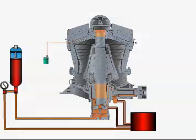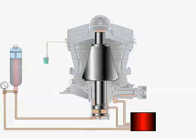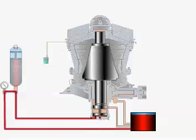The hydroset system affords a rapid and convenient method for adjusting the set. When it is to be reduced, that is, the gap is to be made narrower, oil is pumped from a tank to the hydroset cylinder, thus raising the mantle to the desired position.